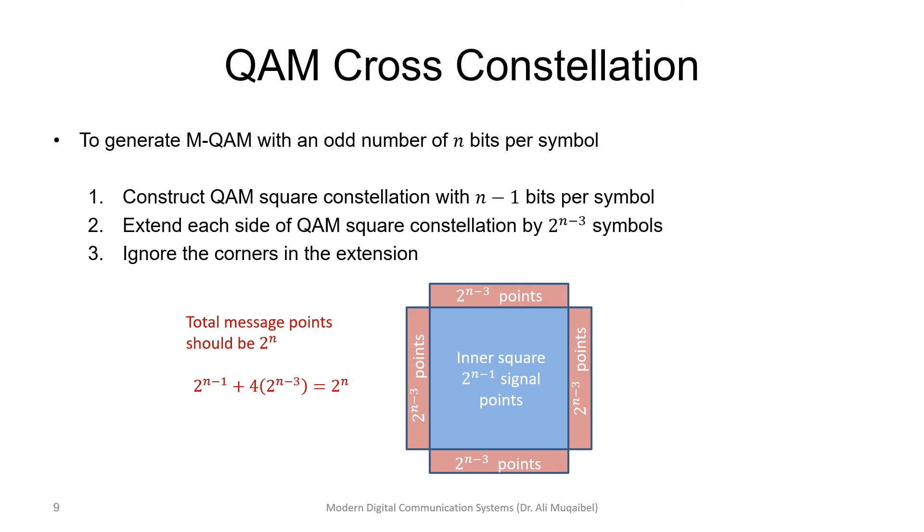For QAM, we have points inside, points at the edge. The probability will not be that easy, but just to save time, we're getting to the final result. If log base 2 of M is not even, we cannot make a square.